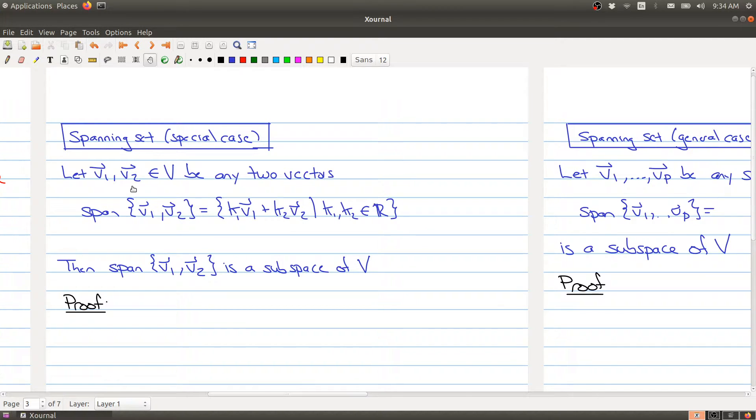We're going to take two vectors in a vector space, it doesn't matter which vector space, and we're going to form the span of those two vectors. We've done span of vectors in Rn, and you define the span of vectors in an arbitrary vector space in the same way. You can take V1 and V2, and then you're going to do all linear combinations of those two vectors.